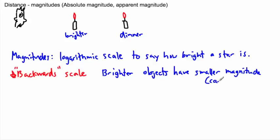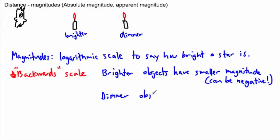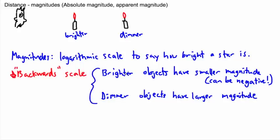In fact, magnitude can actually be negative, which gets really crazy sounding. And dimmer objects have larger magnitude values. So that's what I mean by a backwards scale — something brighter should logically have a larger value, but in this system it has a smaller magnitude, and dimmer things have larger magnitudes.